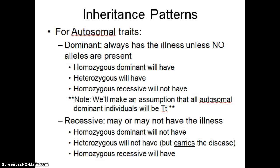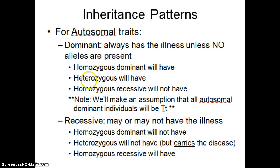For autosomal dominant diseases, the person will always have the disease unless they have no allele at all. A homozygous dominant individual will definitely have the disease, heterozygous will have the disease, and only the homozygous recessive will not. Some people ask whether having two of those alleles makes it worse — generally no, because most of those conditions, once you have one, you just have it. It's not any worse if you have two.